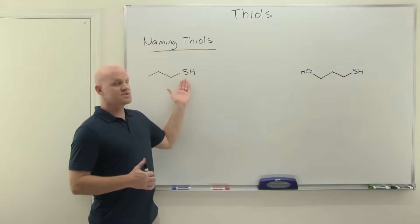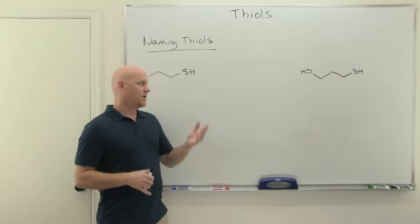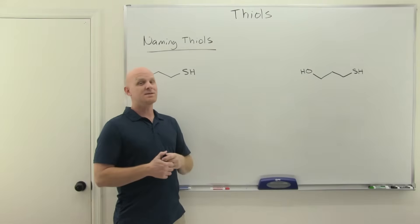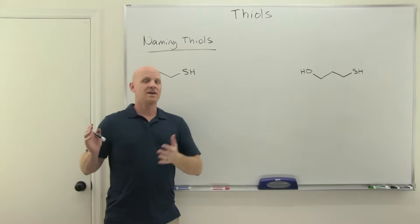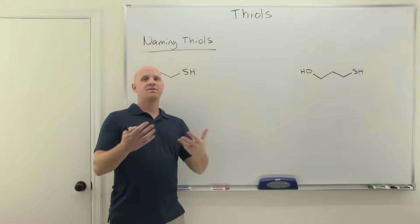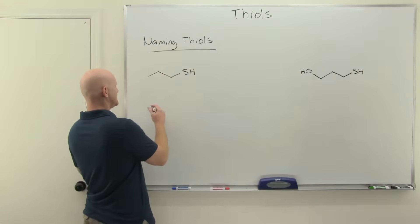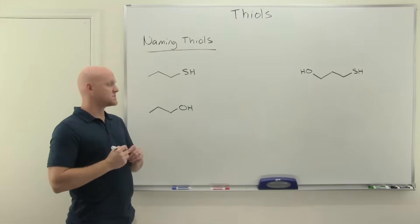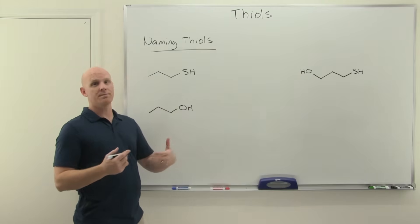Thiols! A thiol is simply the sulfur equivalent of an alcohol—instead of an OH you have an SH. They're named very similar to an alcohol, but instead of saying 'ol' as the suffix, you say 'thiol' as the suffix.